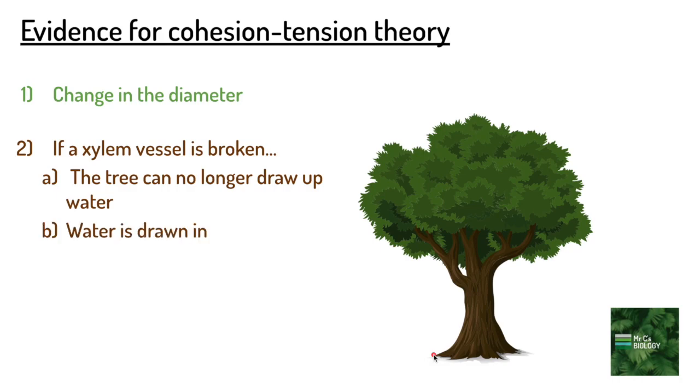Second, water is actually drawn in, and a bubble is formed. Water is drawn into the plant when the xylem vessel is broken because of negative pressure, due to the cohesion between water molecules and the tension. Thanks for watching, and see you next time when we discuss root pressure.